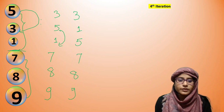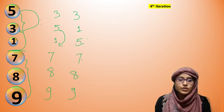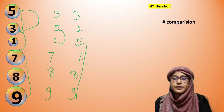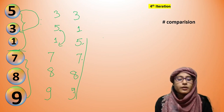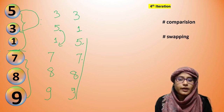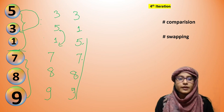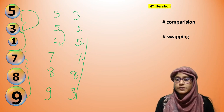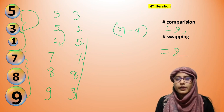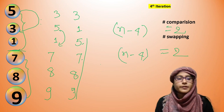Look at our fourth iteration — we now have 4 elements in their correct positions. The number of comparisons: 5 compared to 3, then 5 compared to 1 — that's 2 times. Swapping also happened twice. That means n−4 comparisons and n−4 swappings.